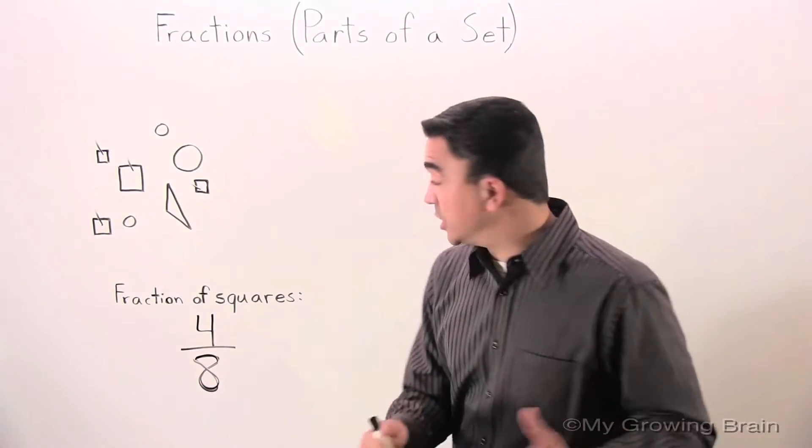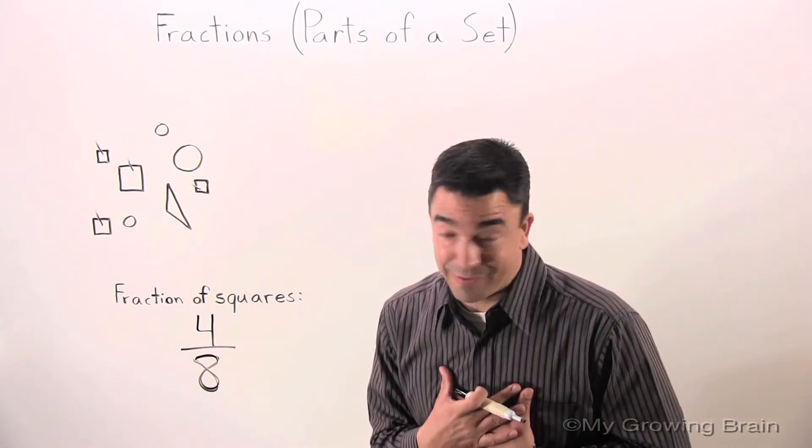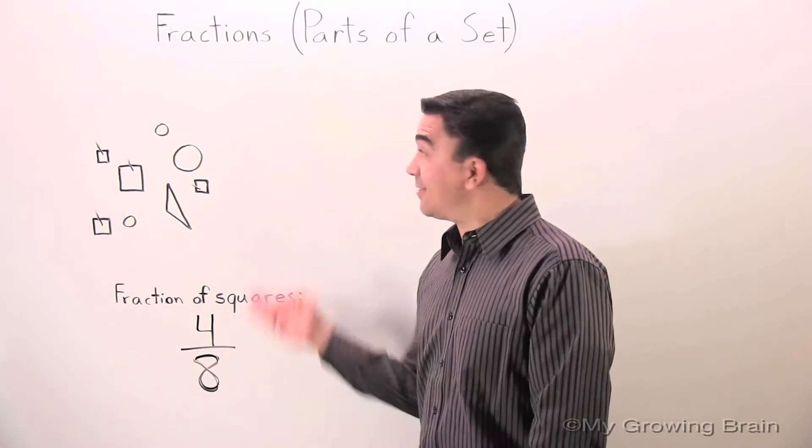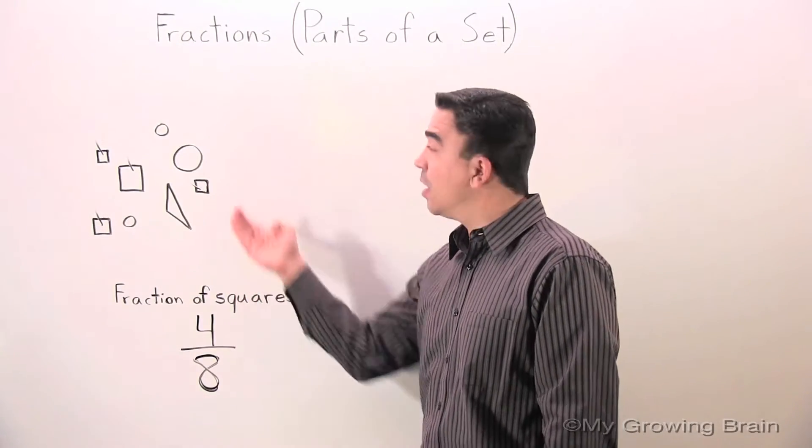The fraction is 4 eighths. So, what I'm saying is, there are 8 shapes and 4 of them are squares.